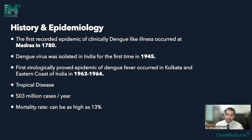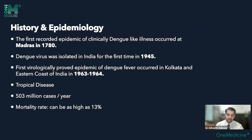It's a tropical disease. We can see approximately 503 million cases per year — this statistic is for the entire world, not just India. In an 8 billion population, 503 million cases a year is quite a significant number. The mortality rates range from less than 0.1% to 13% case fatality rates, making it a serious disease.